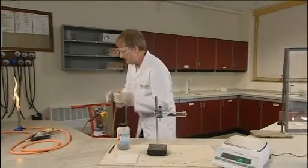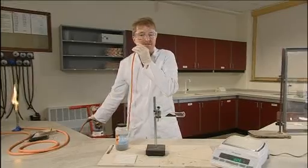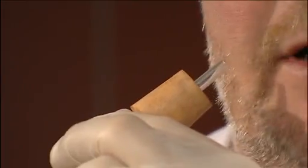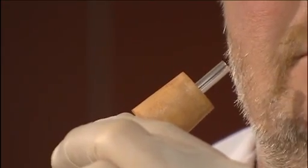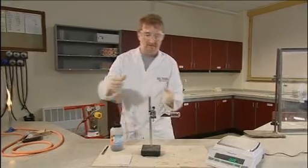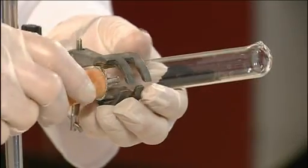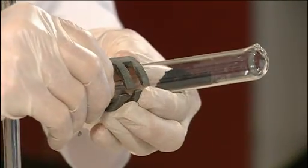We now use the needle valve to adjust the flow of hydrogen. A rate of flow that you can just feel on your cheek is about right. Now place the hydrogen delivery tube in the end of the reduction tube.